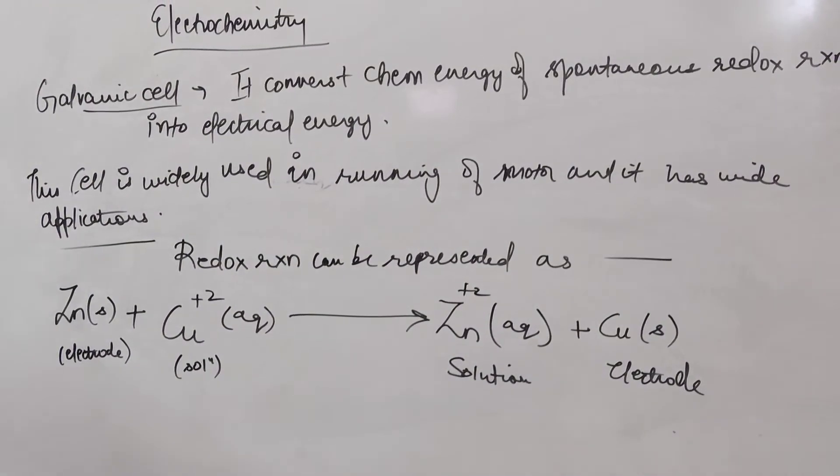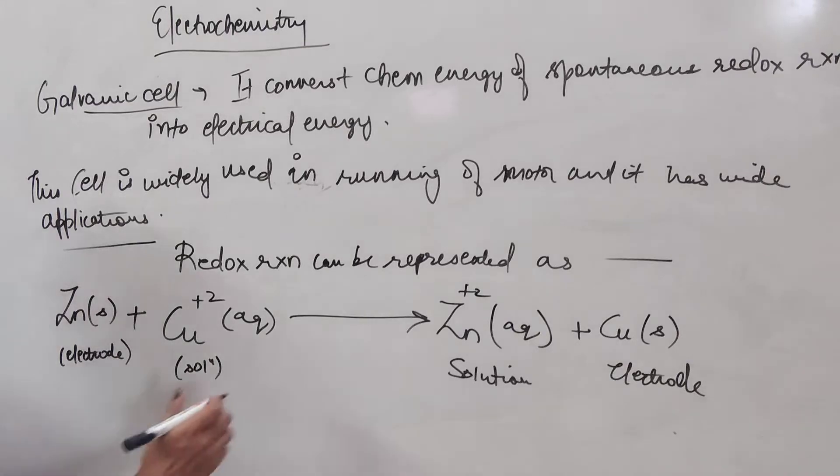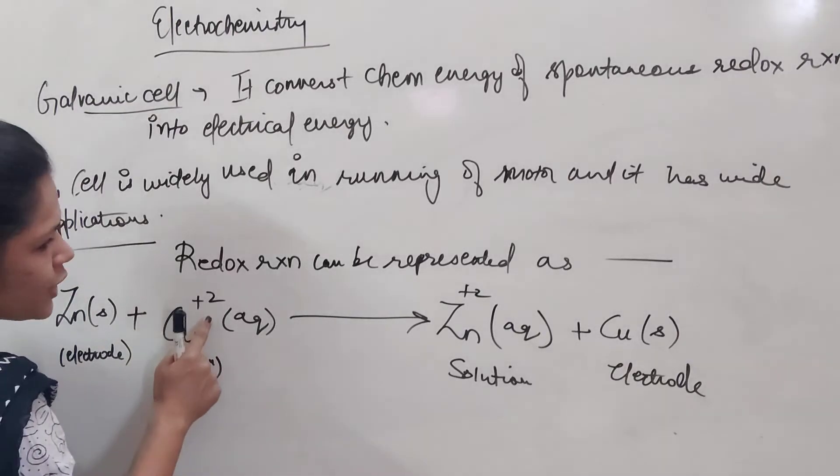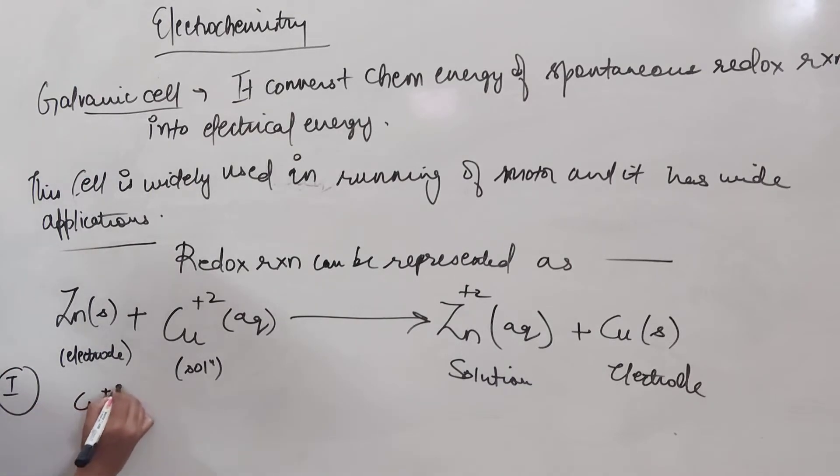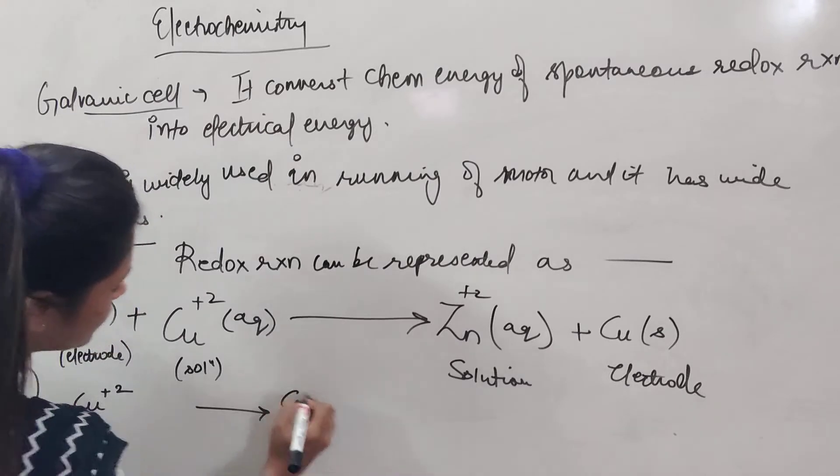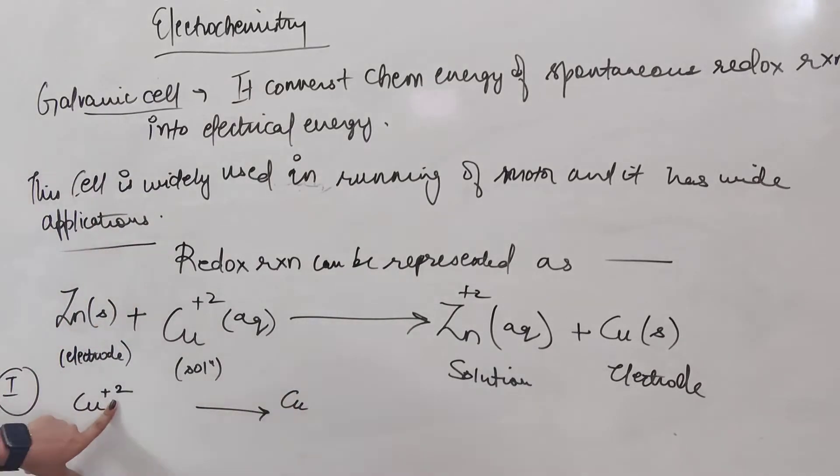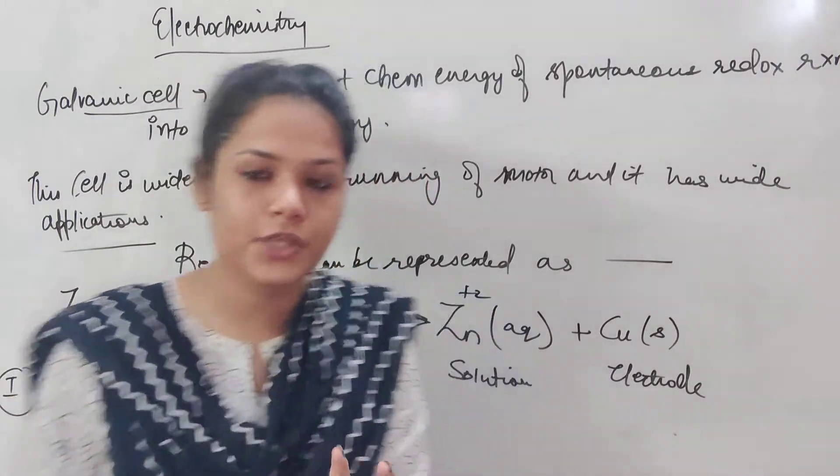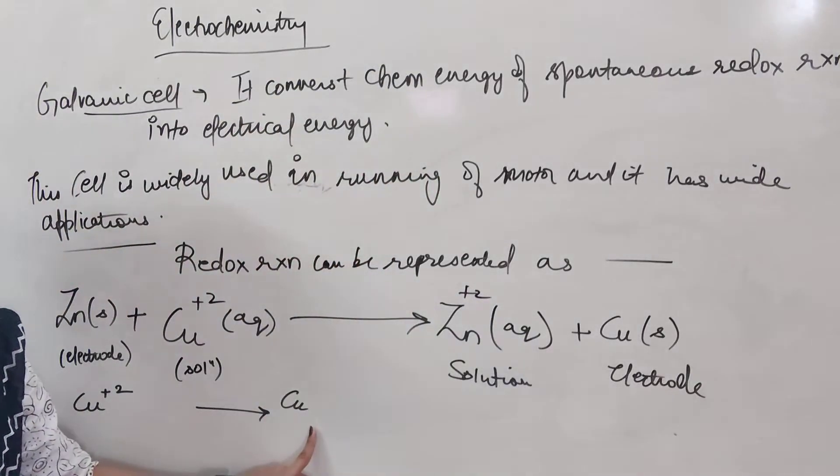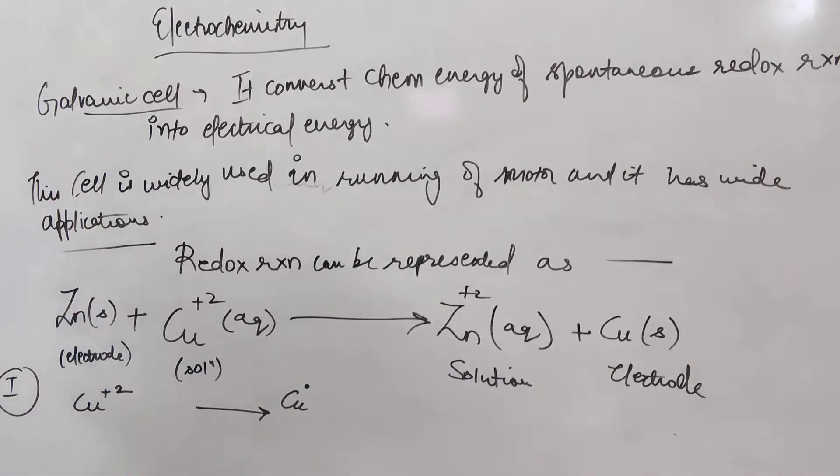So one part, which means copper plus 2 is changing from Cu²⁺ to Cu. So the reaction can be copper plus 2 is changing into copper. So it has plus 2 means it has 2 less electrons. 2 electrons come so we have to supply it with 2 electrons so that it becomes this.